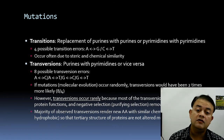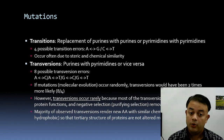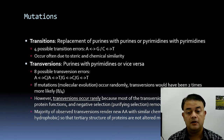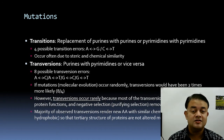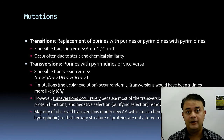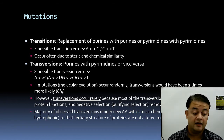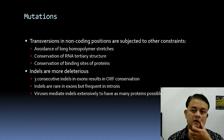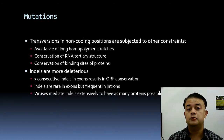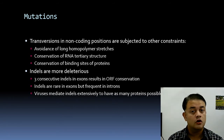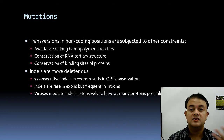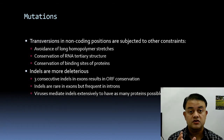Transversions are rare because they result in non-synonymous substitutions — changing amino acids, changing proteins, and potentially causing stillbirth. Even if a transversion is passed to offspring, the individual may never reach reproductive age. This is why transitions dominate observed mutations. The majority of observed transversions involve new amino acids with similar chemical properties (e.g., both hydrophobic), so protein structure is not severely disrupted.